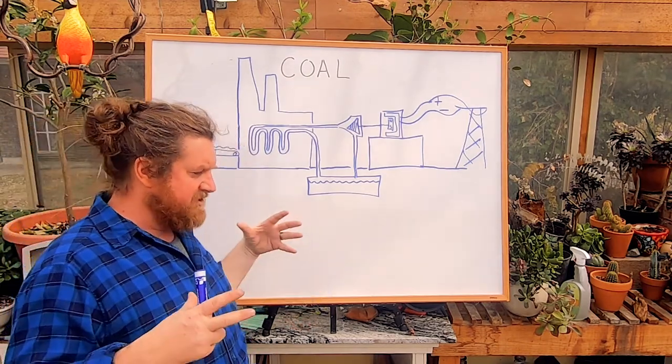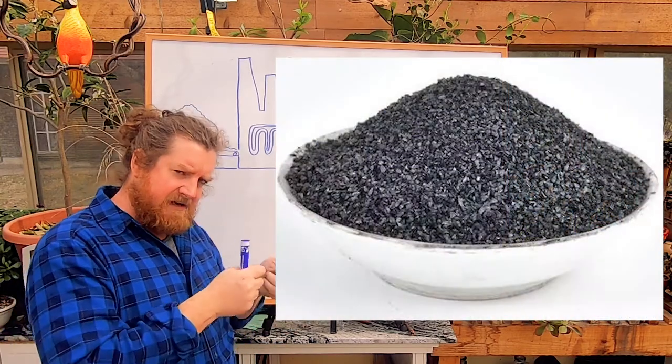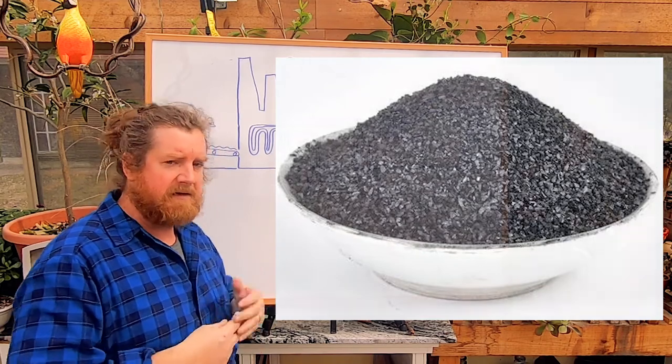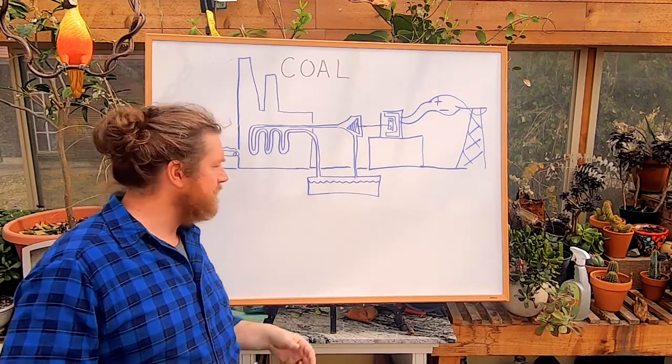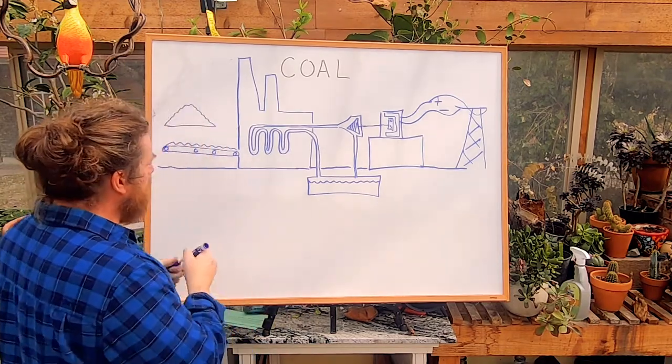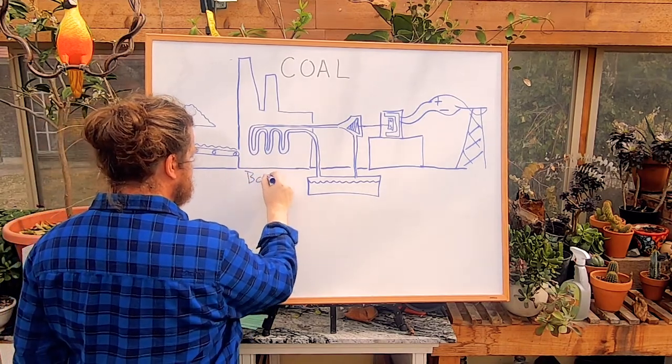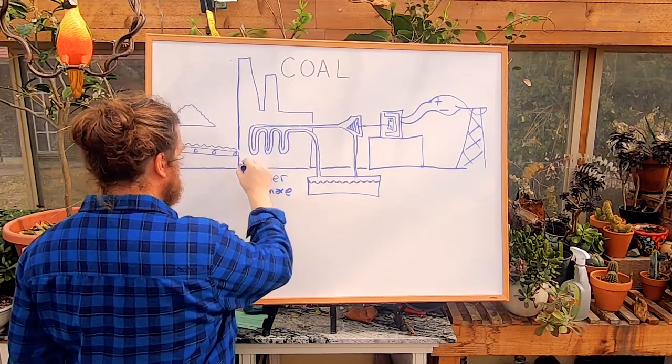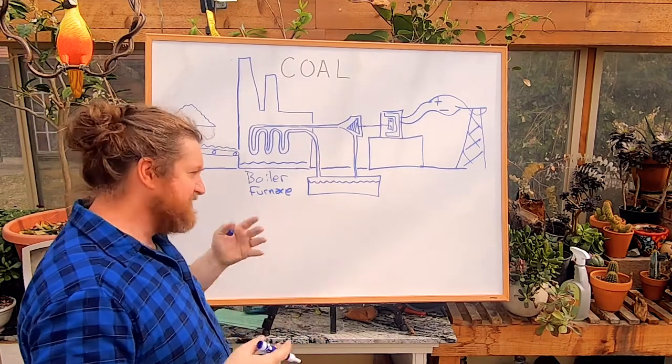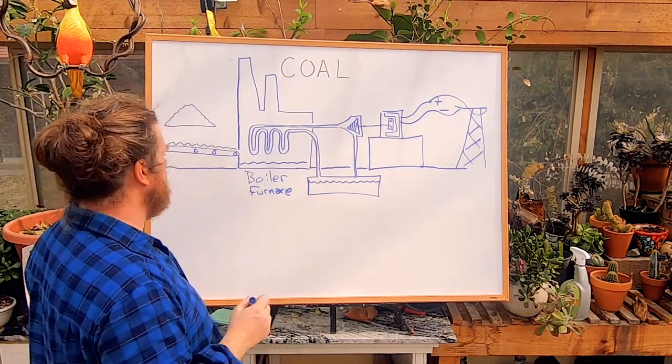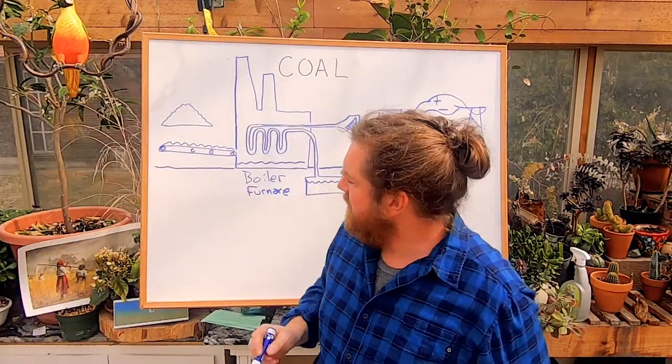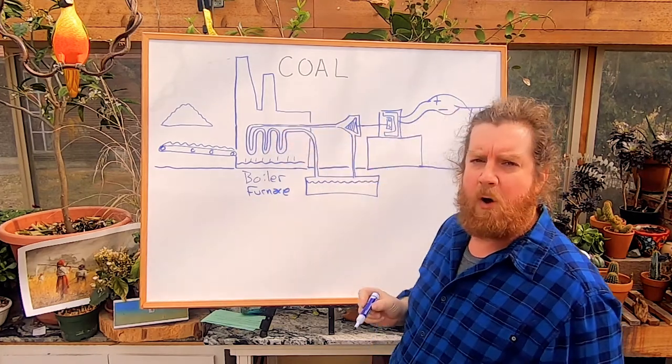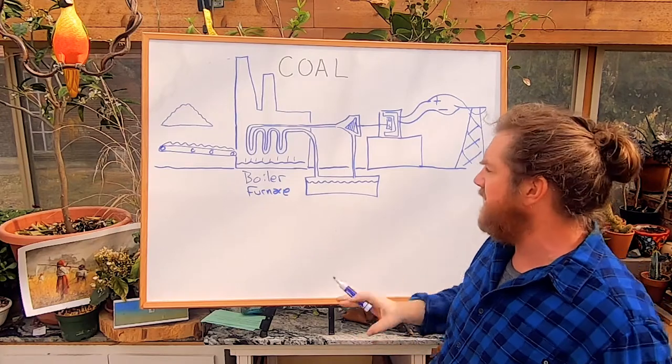Essentially, that coal is crushed into something similar to sand, tiny little particles, because the combustion reaction happens on the outside of the coal. So it works way better, like kindling burns easier than a big log. We take that crushed coal, and we put it in a boiler, or a furnace. This is just an illustrative diagram. It's a little more complicated than this in the real world. But essentially, what happens is that coal is sitting in here burning.